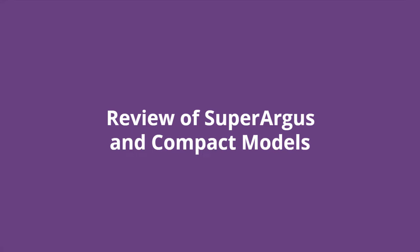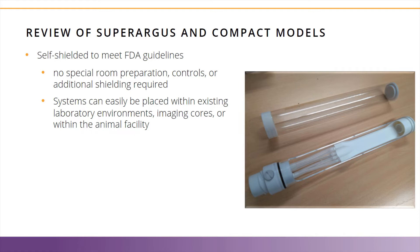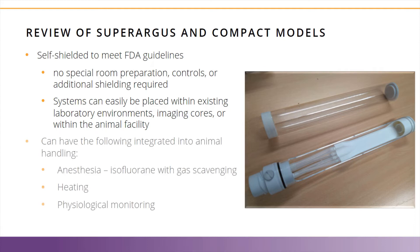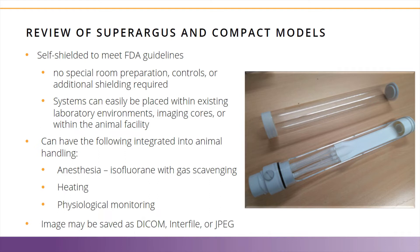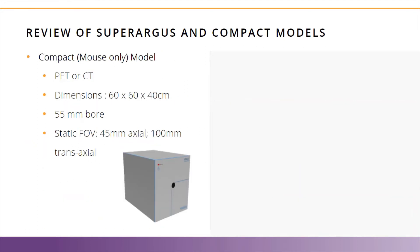The Super Argus and Compact systems are state-of-the-art and designed for use in small preclinical imaging spaces and existing lab spaces. The systems are self-shielded to meet FDA guidelines, meaning no special room preparations are needed and the operator can remain in the room during image acquisition. All systems come with an integrated animal handling system, which can include anesthesia and gas scavenging, heating, and physiological monitoring. Images can be saved in a variety of formats, including DICOM, Interfile, or JPEG, compatible with third-party software options for analysis.